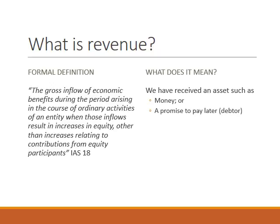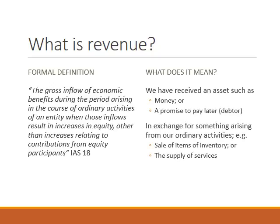The second part of our formal definition considers where the asset we've acquired has actually come from. In the majority of cases it's going to come from either the sale of goods — I've exchanged an item of inventory for some money — or from the supply of services, where I have provided a service and now expect to be paid for it. The point is that it has come about due to the company's ordinary day-to-day activities, not from the shareholders, who are referred to as equity participants, who haven't put any extra investment into the company. When we think about the money acquired from the sale of goods, that transaction is going to affect our profits — and that's what revenue is.